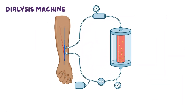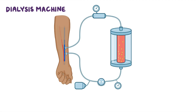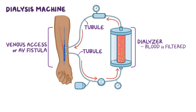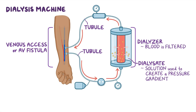To understand how this works, let's look at the dialysis machine. One of the most important components is the dialyzer, through which the client's blood is filtered. The client is connected to the dialysis machine using the venous access or AV fistula via two tubules — one takes the client's blood to the dialyzer, and the other returns the filtered blood. The dialysis machine also has the dialysate, a solution used to create a pressure gradient that makes diffusion happen.